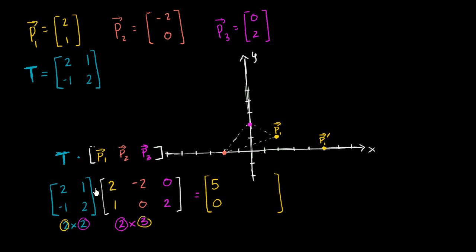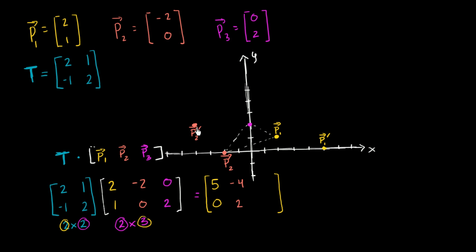Now let's go to P2. Two times negative two is negative four, plus one times zero — so negative four plus zero, which is just negative four. And then negative one times negative two is positive two, plus two times zero, which is zero — so positive two plus zero, which is just two. So negative four comma two, which is right over here. So this was P2 right over here, and this is P2 prime.